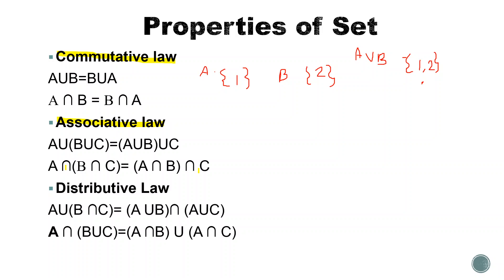The Distributive law states: A union (B intersection C) equals (A union B) intersection (A union C). Similarly, A intersection (B union C) equals (A intersection B) union (A intersection C). We distribute the outer operation across the inner operation.